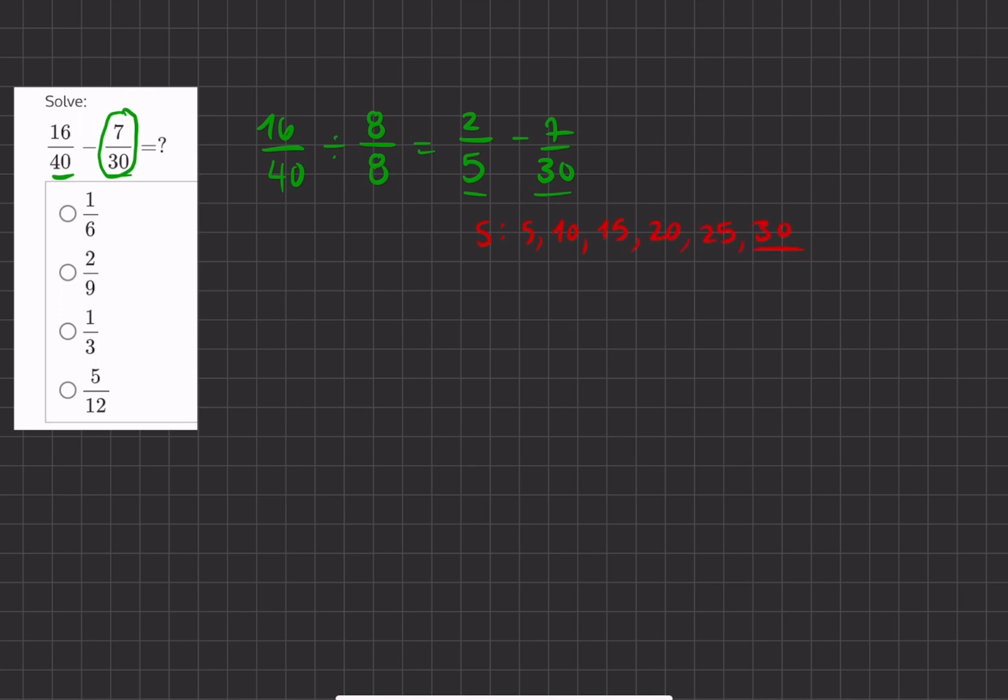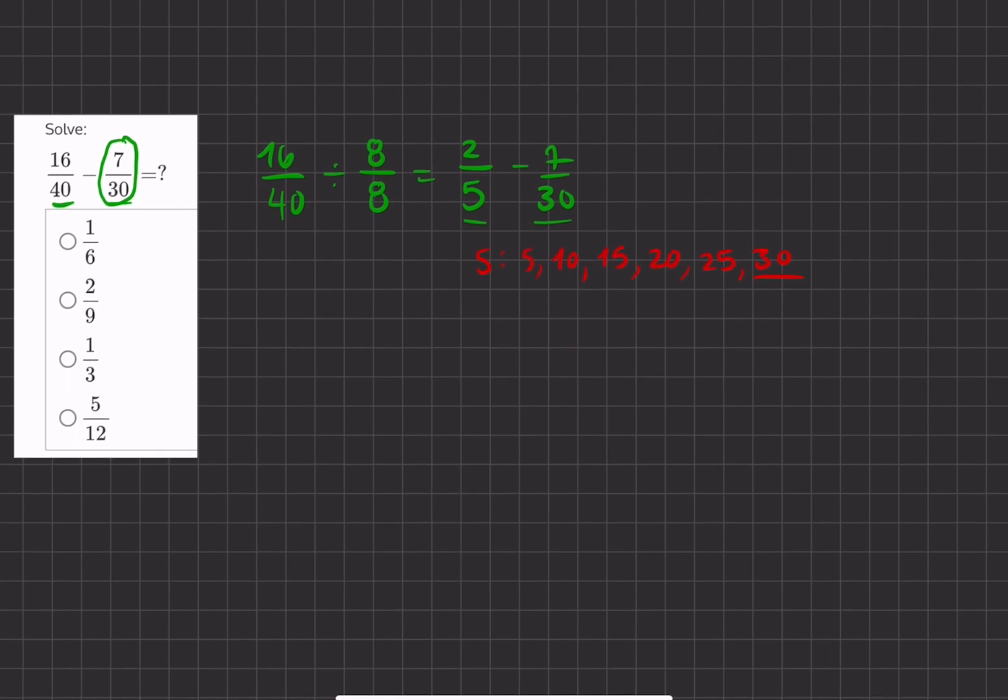So we know that 30 can be a common denominator for both fractions. Let's do further manipulation and turn 2 fifths to have a common denominator of 30.